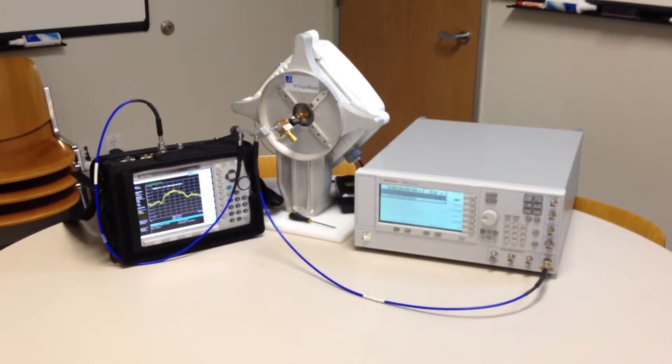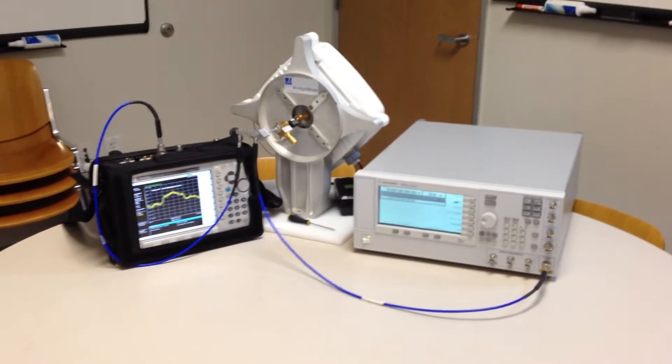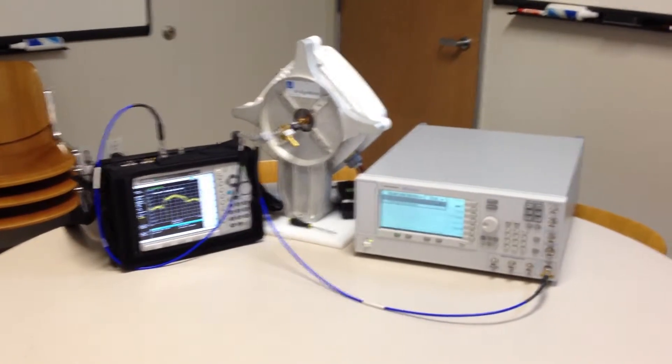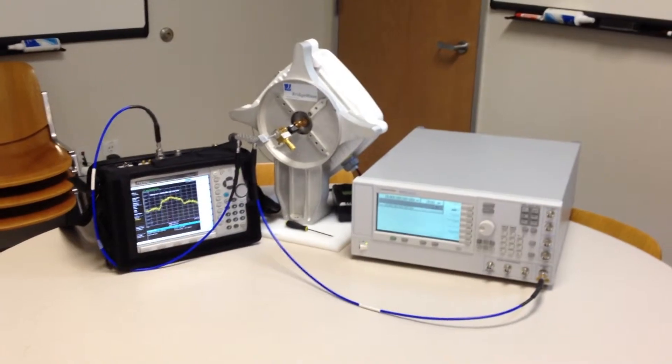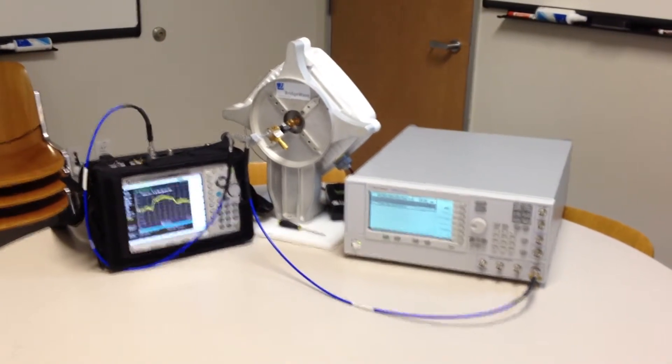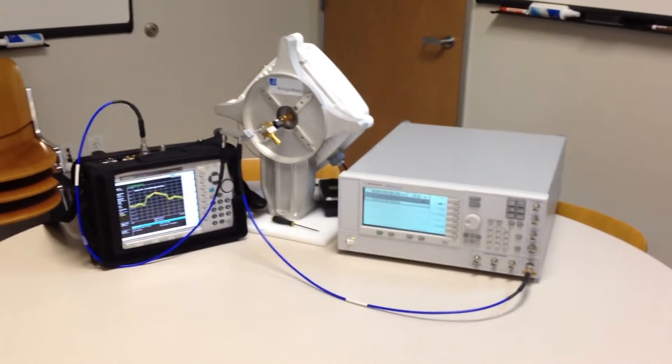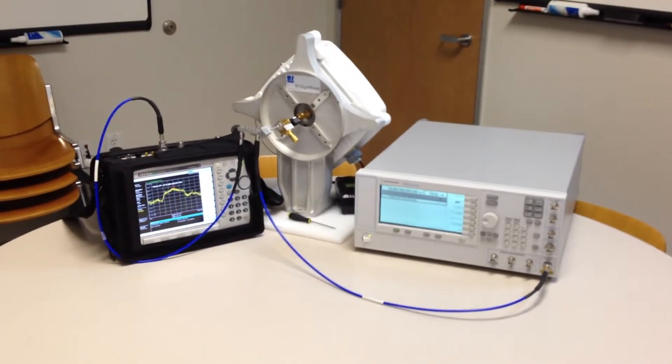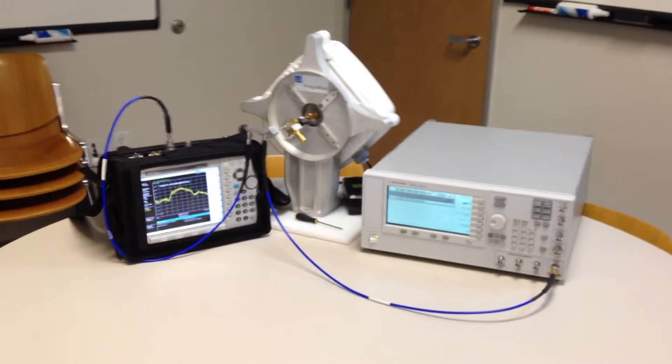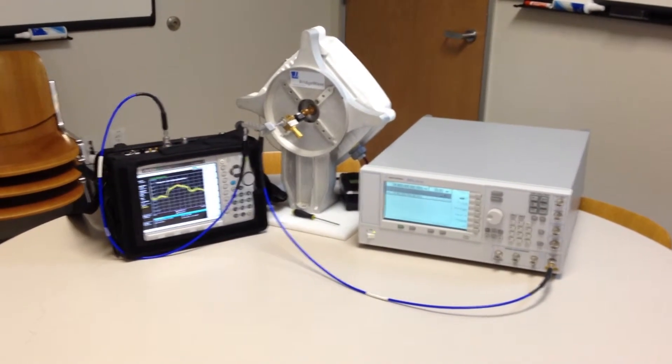This is the actual setup for making an E-band transmitter measurement. The elements here in the middle is the transmitter that's under test. To the right, we have the microwave synthesizer, and to the left, we have a hand-held spectrum analyzer, in this case, the V&A master from Anritsu.